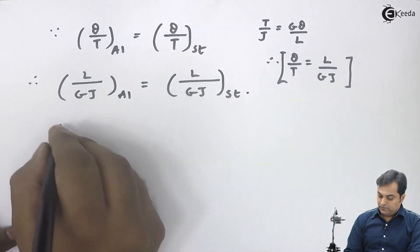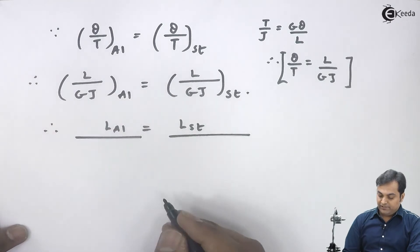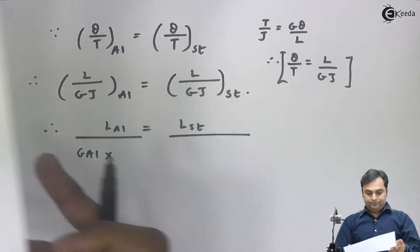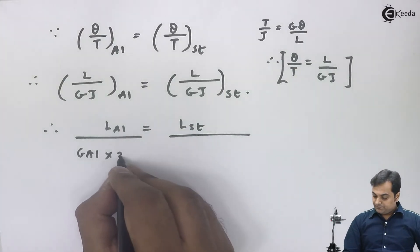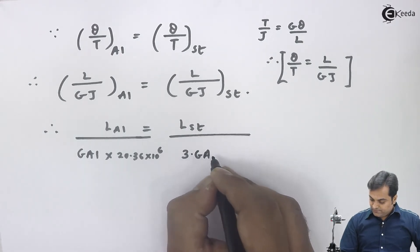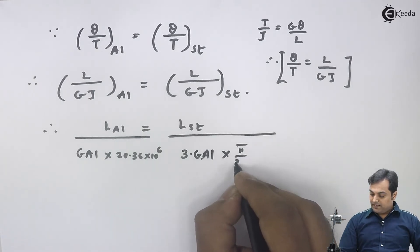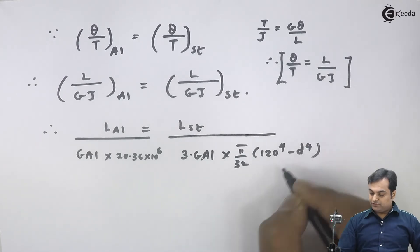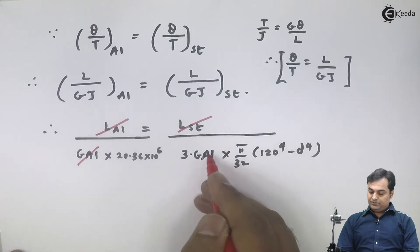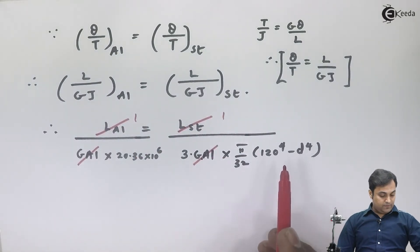Since the length of aluminium equals the length of steel, L cancels out from both sides. Substituting values: G for aluminium times J for aluminium (which is 20.36 × 10^6) equals G for steel, which is 3 times G for aluminium, times J for steel which is pi/32 times (120^4 minus d^4). Since G for aluminium appears on both sides, it also cancels out, leaving only the unknown small d.